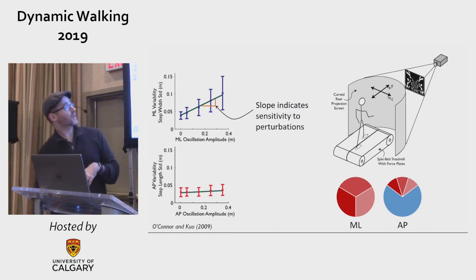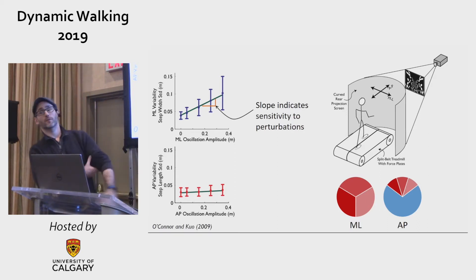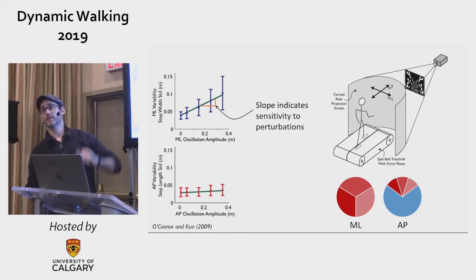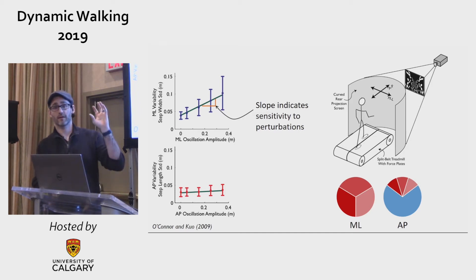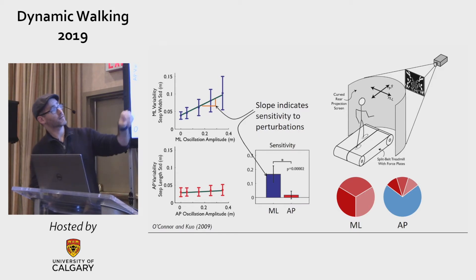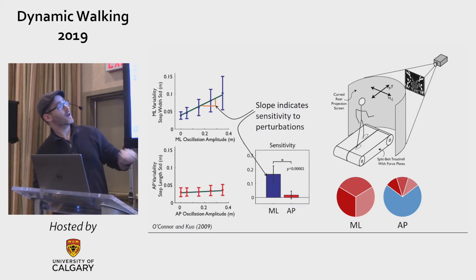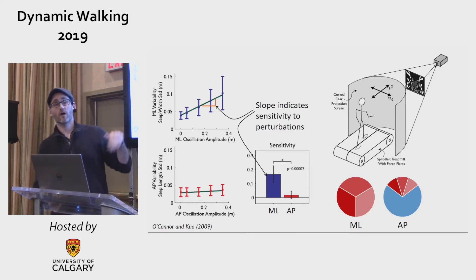In the AP direction, as we increased AP perturbation amplitude, they actually didn't change their step length variability at all — they rejected the AP perturbations. Our main outcome metric is the slope of the perturbation amplitude versus step placement variability trend, where the slope indicates sensitivity to the visual perturbations — you can think of it as a control gain. We found high medial-lateral sensitivity and low, in fact not significant, AP sensitivity.